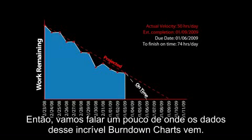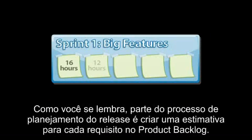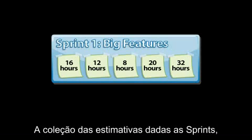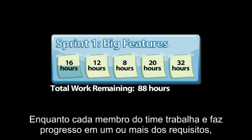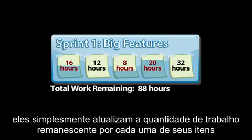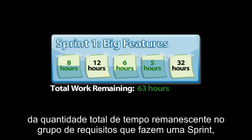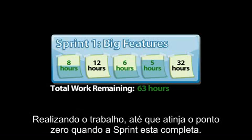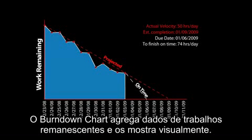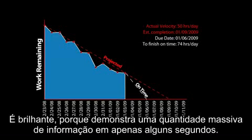So let's talk about where the data for this incredibly useful burndown chart comes from. As you recall, part of the release planning process was to create an estimate for each feature in the product backlog. The collection of these estimates for a given sprint represents the total amount of work that must be done to complete that sprint. As each team member makes progress on one or more features, they simply update the amount of time remaining for each of their own items. So the total amount of time remaining changes on a day-by-day basis, hopefully going downward until it hits zero when the sprint is complete. The burndown chart aggregates the remaining work data and shows it visually — it's brilliant because it communicates a massive amount of information in just a few seconds.